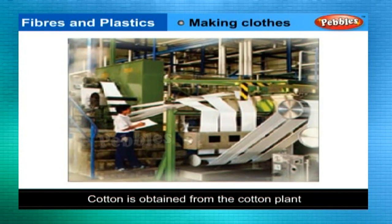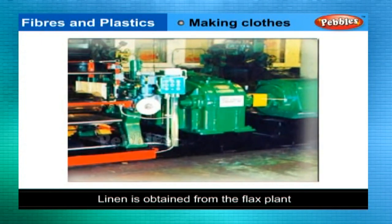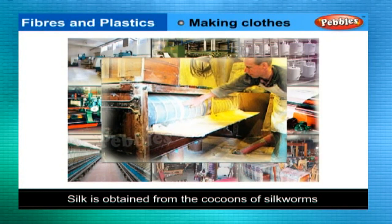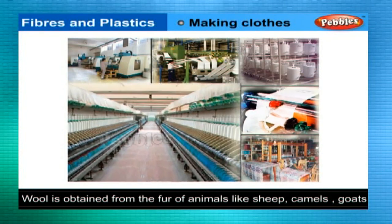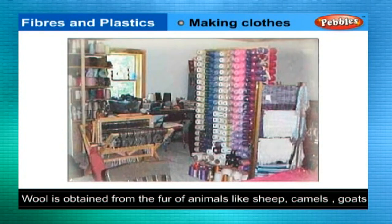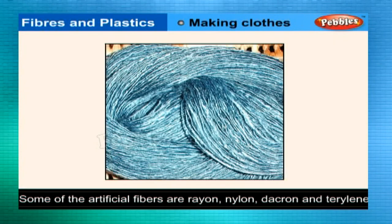Cotton is obtained from the cotton plant. Linen is obtained from the flax plant. Silk is obtained from the cocoons that silkworms spin, commonly found on mulberry trees. Wool is obtained from the fur of animals like sheep, camels, and goats. The woolen fibers are spun into woolen cloth.